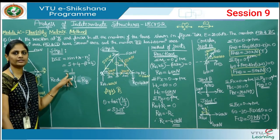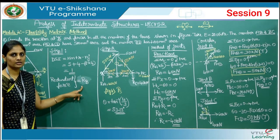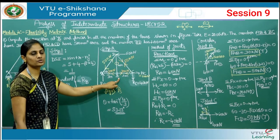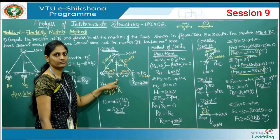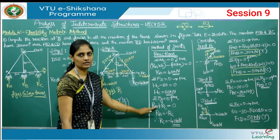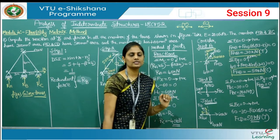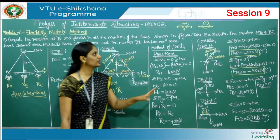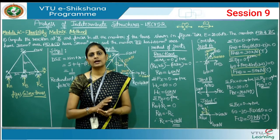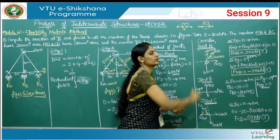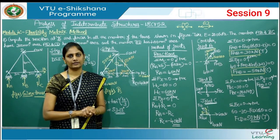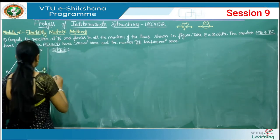In step two, we found member forces Ps by removing the redundant force RB and analyzing the truss under applied loads using method of joints. Remember: forces away from the joint are tensile (positive) and towards the joint are compressive (negative). Now in step three, we consider the same truss diagram again.